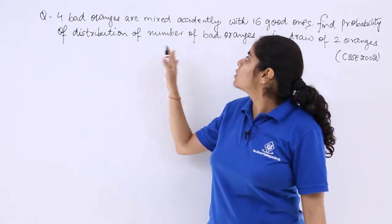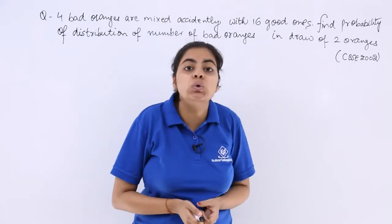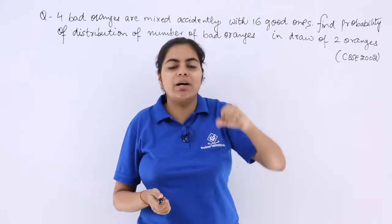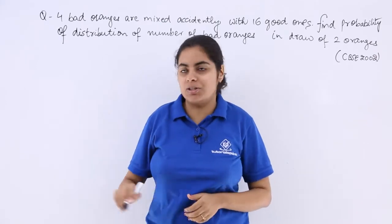Find the probability of distribution of number of bad oranges in a draw of 2 oranges. That means you are going to take out 2 oranges. Now you have to find out probability of distribution of bad oranges.